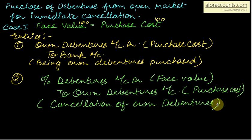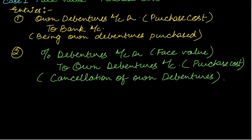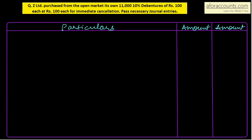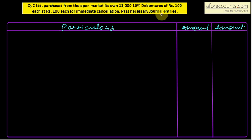Now let's take up a practical question. Z Limited purchased from the open market its own 11,000 10% debentures of Rs. 100 each at Rs. 100 each — the face value was 100 each and we paid 100 each — for immediate cancellation. Pass the necessary journal entries.